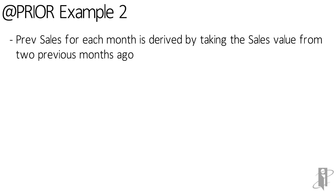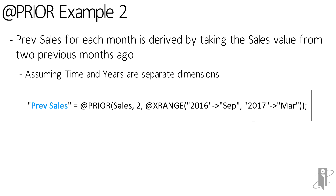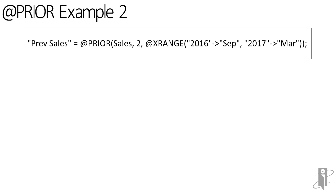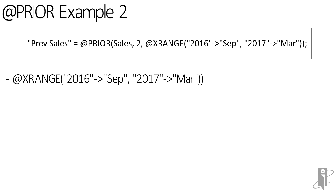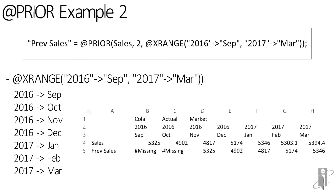For our second example, the previous sales for each month is derived by taking the sales value from the second previous month. For this example, we imagine our time period and years dimensions are separate. With the separate dimensions, we can use the X range function to traverse both dimensions as one list of members. The formula for previous sales is Prior for the sales member retrieving the second previous month in the X range of September 2016 through March 2017. As we look at a retrieve, we can see that the sales values from two months prior are brought into the previous sales member of the current month.